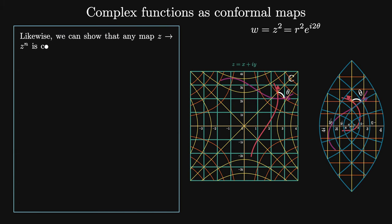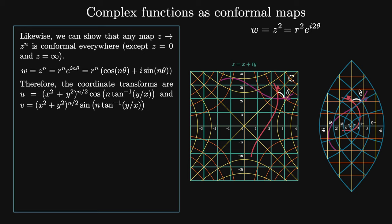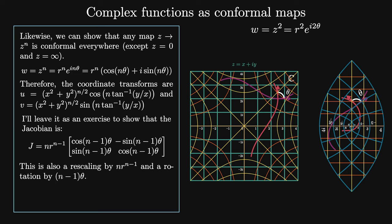Likewise, we can show that any map z goes to z to the n is conformal everywhere except z = 0 and z = ∞. This map is defined as w = zⁿ, which in polar coordinates equals rⁿ e^{inθ} = rⁿ(cos nθ + i sin nθ). The coordinate transforms are u = (x²+y²)^{n/2} cos(n arctan(y/x)) and v = (x²+y²)^{n/2} sin(n arctan(y/x)). The Jacobian is J = n·r^{n−1} times [[cos(n−1)θ, −sin(n−1)θ],[sin(n−1)θ, cos(n−1)θ]] — a rescaling by n·r^{n−1} and a rotation by (n−1)θ. Thus any function described by a power series is locally conformal.